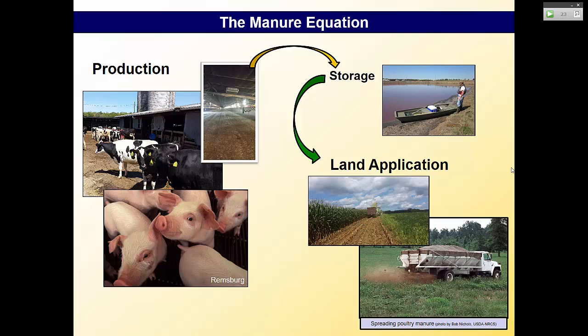In a manure management equation, when writing nutrient management plans, you have to think about several things: first, production — how much manure is produced depends on animal type and age; then storage type — where it's stored also changes the properties of the manure over time; and finally, land application — how much you're allowed to apply based on regulatory requirements and crop nutrient needs.